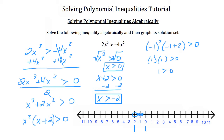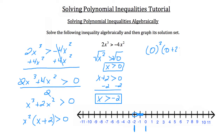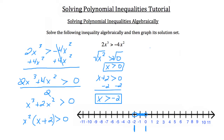Let's see what happens at x equals 0: 0 squared times (0 plus 2) gives 0 times 2 equals 0, and 0 is not greater than 0, so we have another open circle at 0. We'll have a shaded region between negative 2 and 0, not including either point. Testing x equals 1 to the right: 1 squared times (1 plus 2) is 1 times 3 equals 3, and 3 is greater than 0. So all of this region to the right works too.